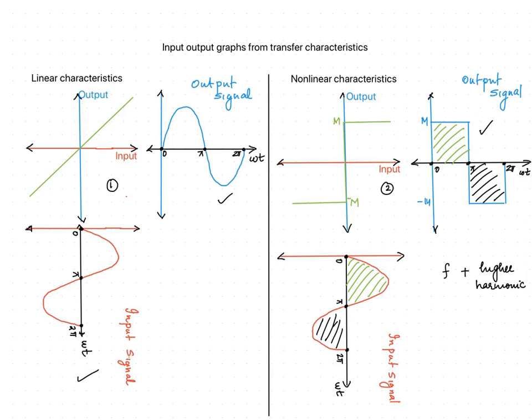According to the Fourier description of signals, any complex signal can be thought of as composed of a sinusoidal signal with a fundamental component of frequency f and higher harmonic components. This shows that, as far as the non-linear element is concerned, the output will not be a sine wave for a sinusoidal input. Hence, we can conclude that there will be higher harmonic frequency components in the output of a non-linear element.